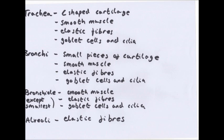To summarise the structures in each section: the trachea has C-shaped cartilage, smooth muscle, elastic fibres, goblet cells, and cilia. The bronchi have small pieces of cartilage (not in a C-shape), smooth muscle, elastic fibres, goblet cells, and cilia. Normal bronchioles have smooth muscle, elastic fibres, goblet cells, and cilia, but as bronchioles decrease in size you stop getting goblet cells, then no cilia, then no smooth muscle. Finally, the alveoli have only elastic fibres and squamous epithelium — no cilia, goblet cells, smooth muscle, or cartilage.